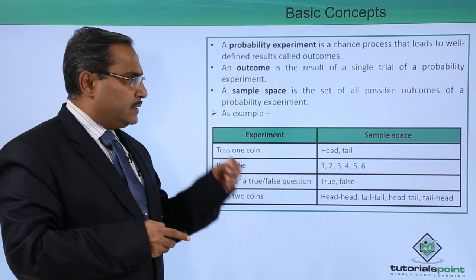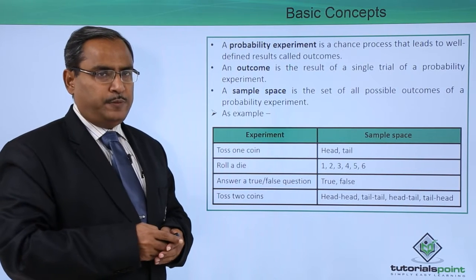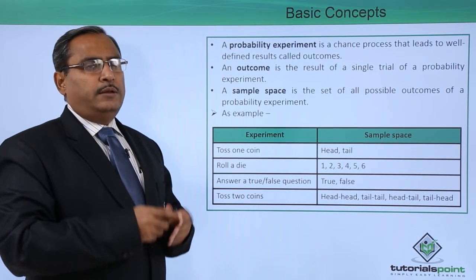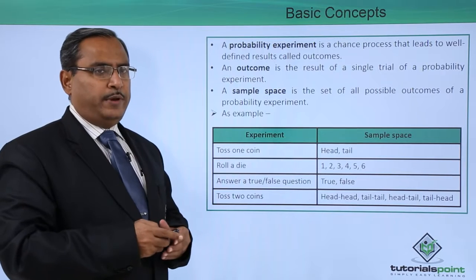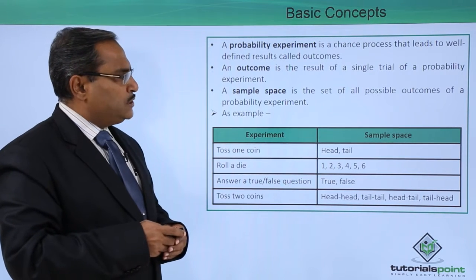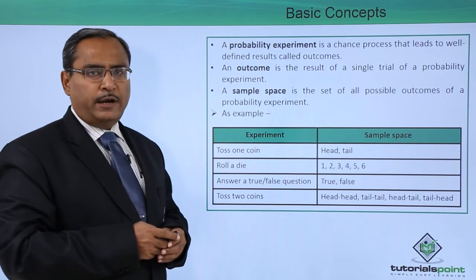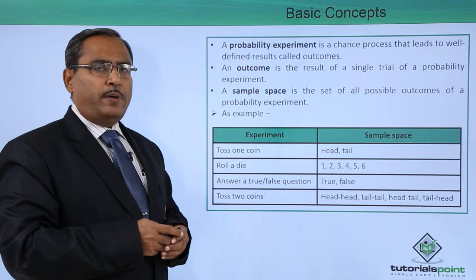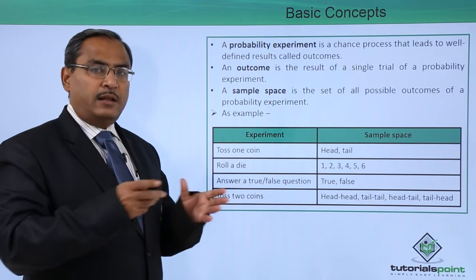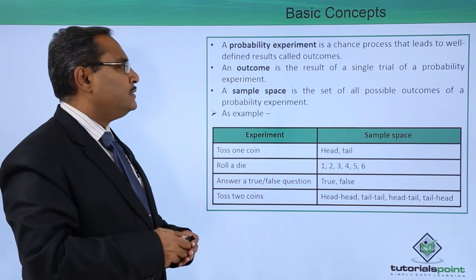An outcome is the result of a single trial of a probability experiment. Whenever we execute one probability experiment, we are going to get one outcome. A sample space is the set of all possible outcomes of a probability experiment. In a probability experiment, we might be having several outcomes, so the set of all these outcomes will form one sample space.